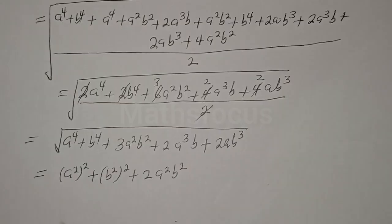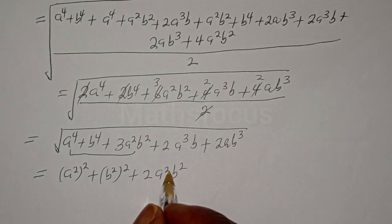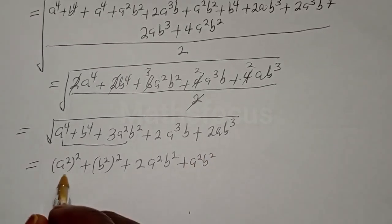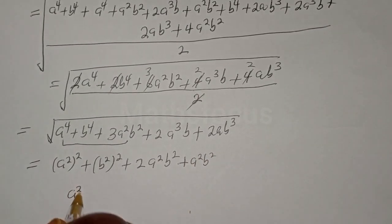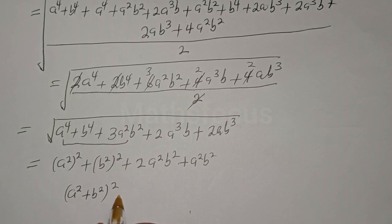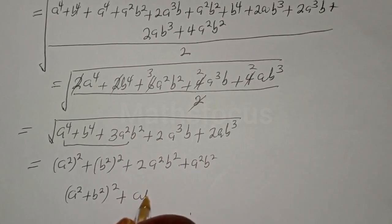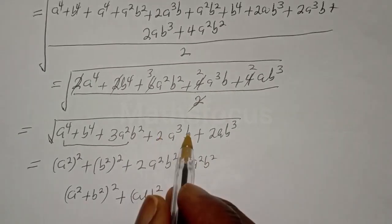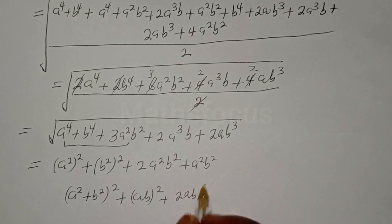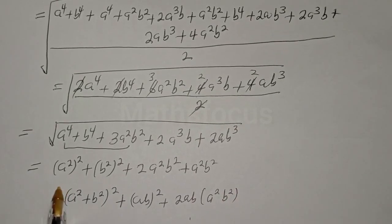From here, a⁴ plus b⁴ plus 2a²b² plus a²b² can be written as (a² plus b²)² plus a²b², and the remaining terms 2a³b plus 2ab³ can be written as 2ab(a² plus b²). So the whole expression under the square root factors as (a² plus b² plus ab)².